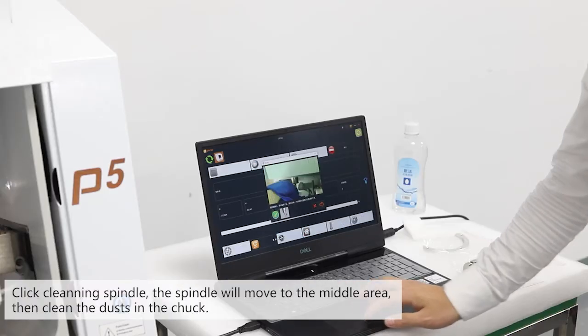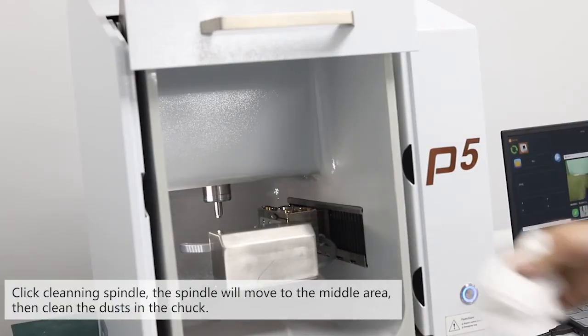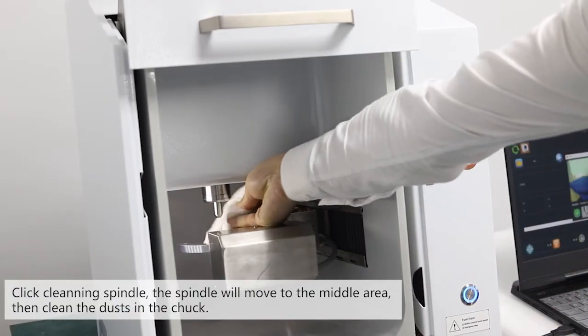Click cleaning spindle. The spindle will move to the center area. Then clean the dust in the chuck.